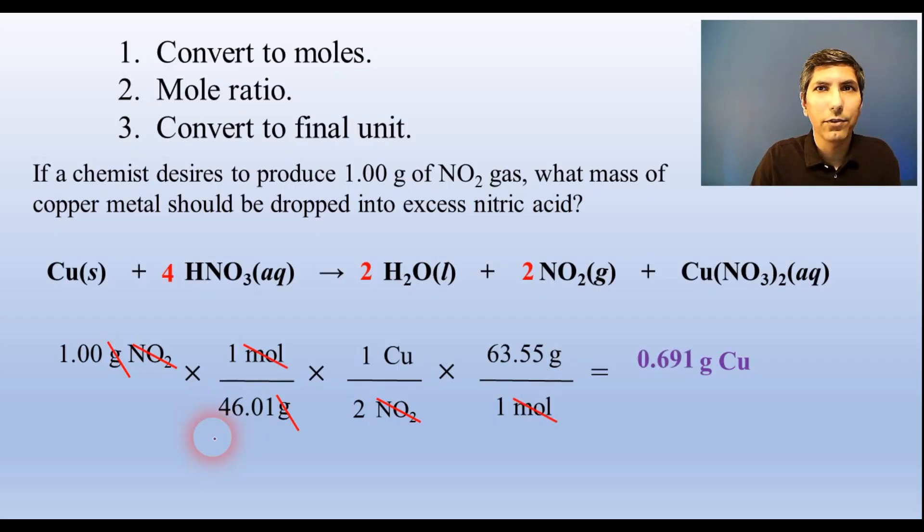There are variations of this. Sometimes we're given two reactants and have to decide which is the limiting reactant. So we do the problem twice and decide which reactant produces less product. Or we have a solution and we use molarity as a conversion factor. For example, 0.50 molar would be 0.50 moles equivalent to one liter. Sometimes we have to use the ideal gas law to figure out how many moles we have in lieu of converting to moles in step one.